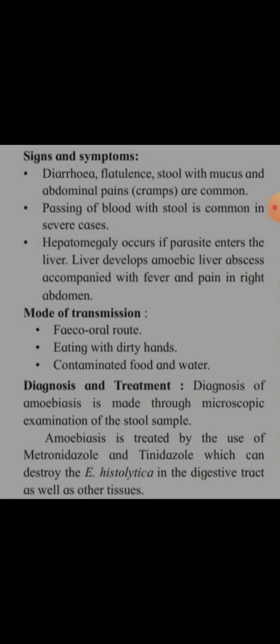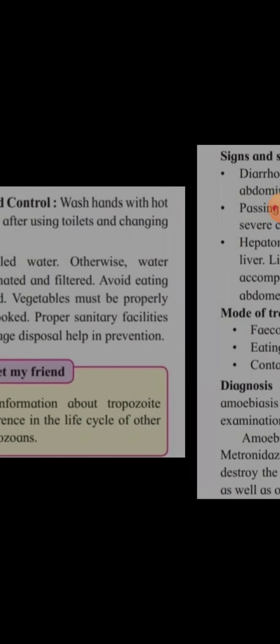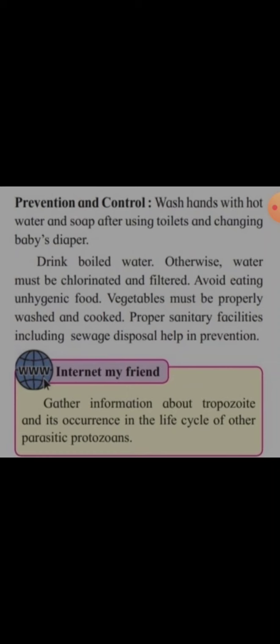For diagnosis, a stool sample is examined under a microscope to find Entamoeba histolytica, from which it can be understood that the patient has amoebiasis. For treatment, two drugs are given: metronidazole and tinidazole. After these are given, Entamoeba histolytica in the patient's digestive tract and other tissues is destroyed.